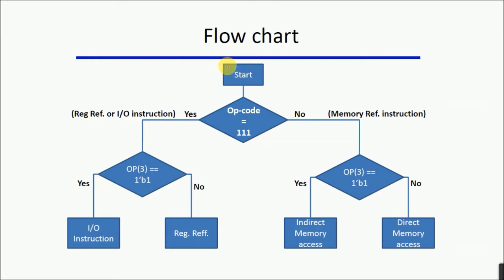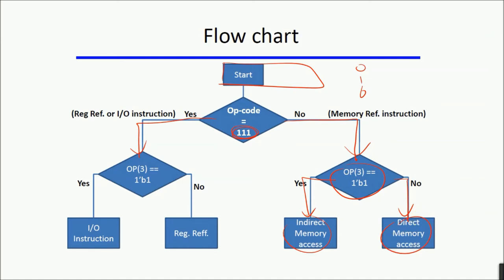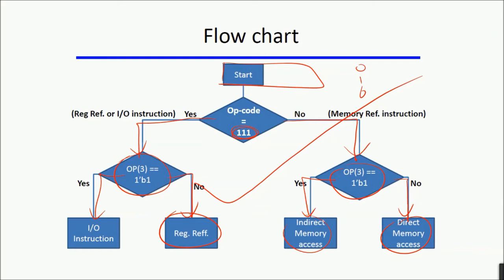This can be explained using a flowchart. The instruction is put into the instruction register and the three bits of opcode are checked. If the opcode is triple-one (111), it is not a memory reference instruction and the 12 bits are not an address. If the opcode is zero to six, it is a memory reference instruction; then the fourth bit is checked — if one it is indirect addressing, if zero it is direct addressing. In the triple-one case, if the fourth bit is one it is an I/O instruction, if zero it is a register reference instruction.